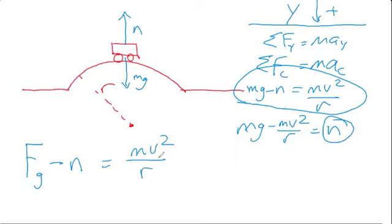Now check this out: as you go faster and faster, in other words as V gets bigger and bigger, what happens to the right side as V gets bigger? It gets bigger as well.